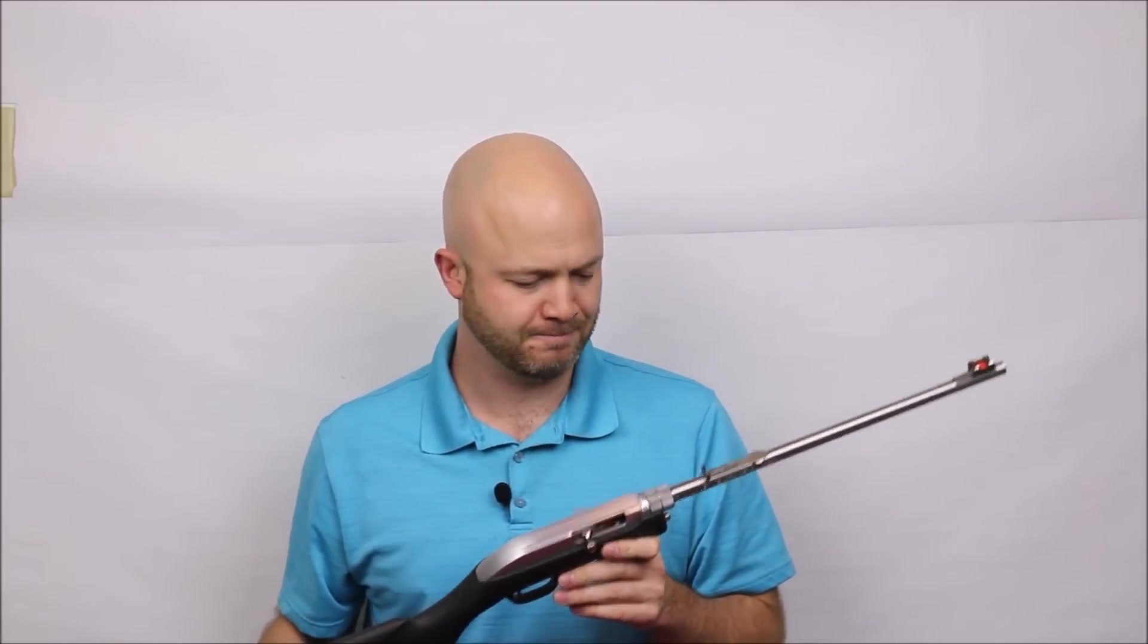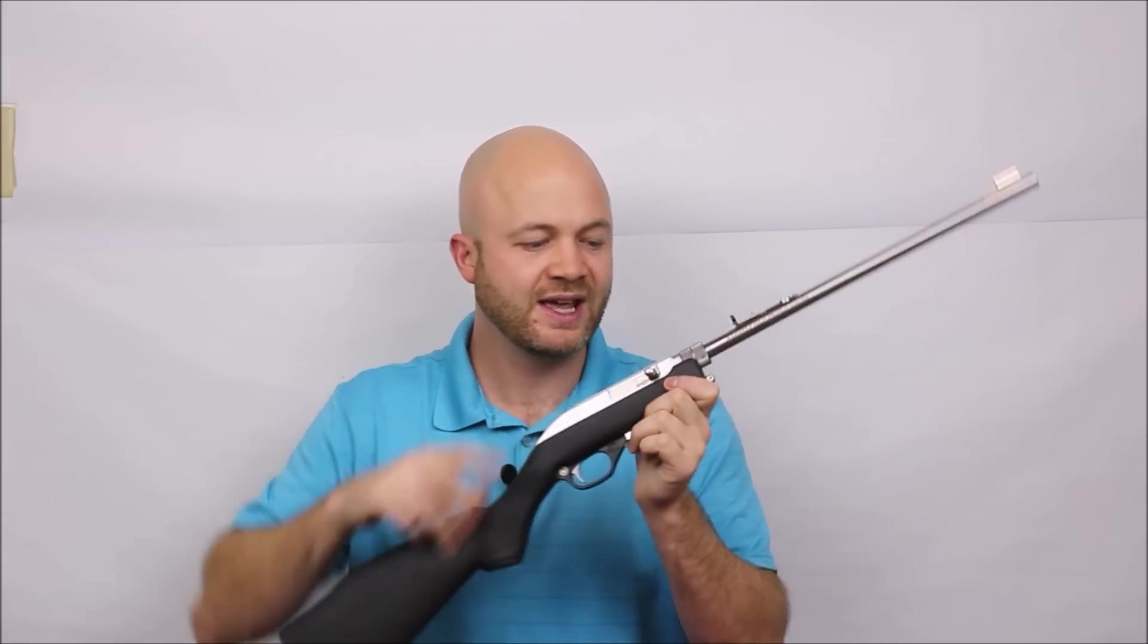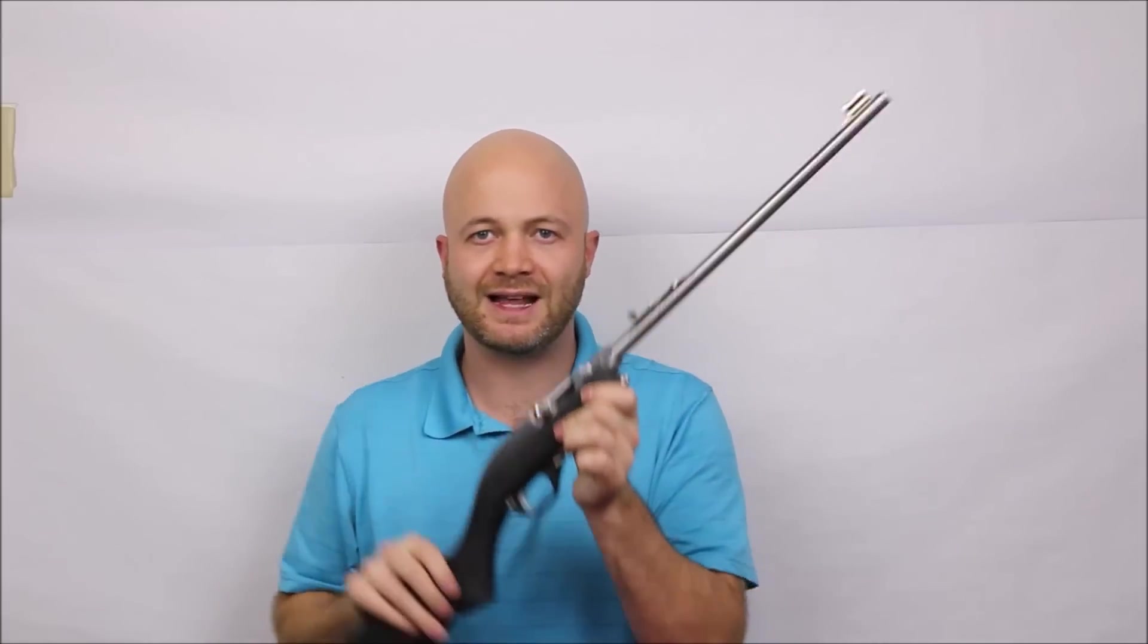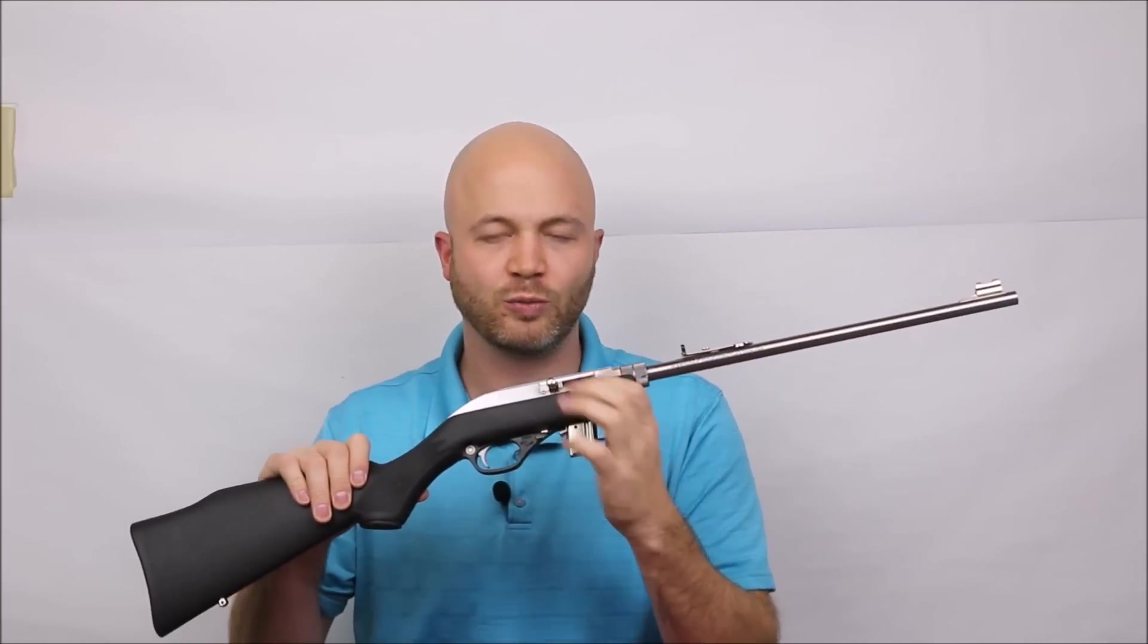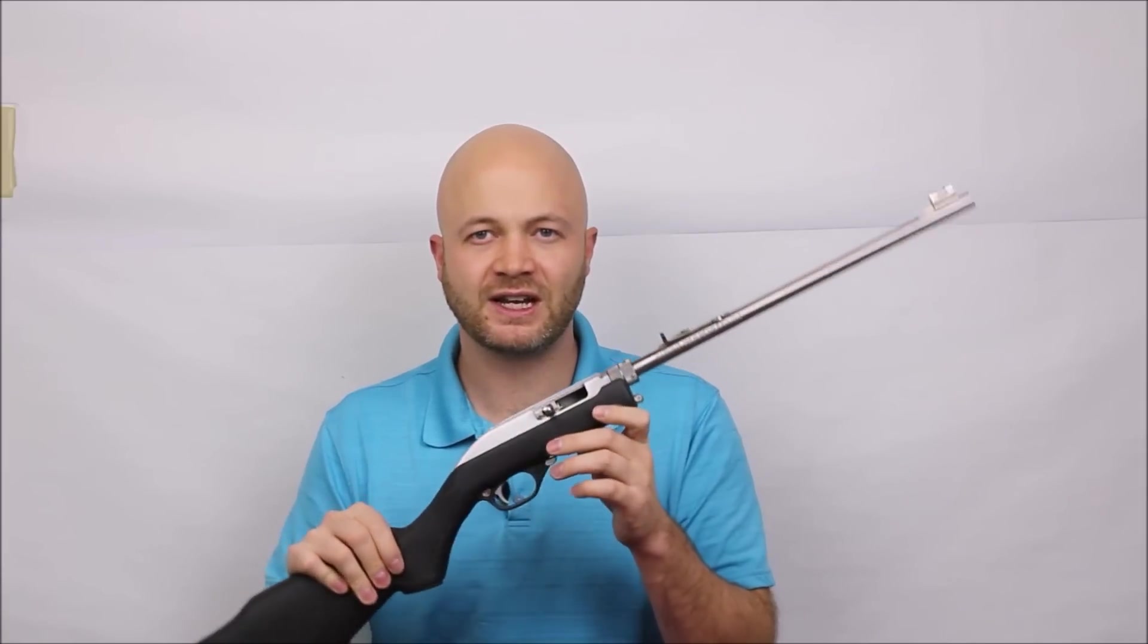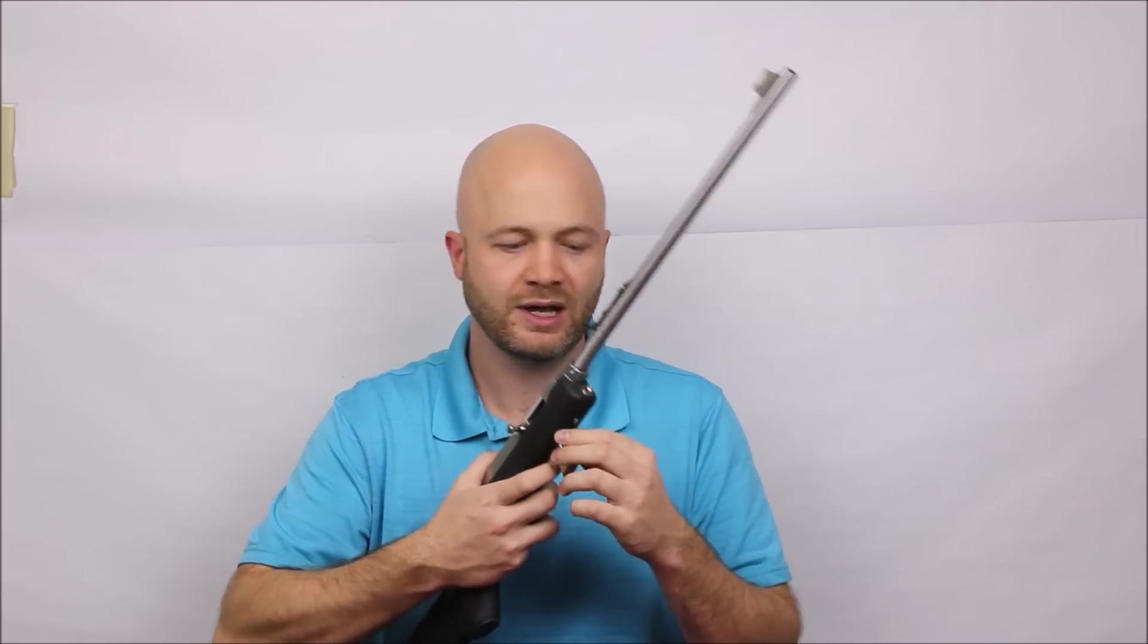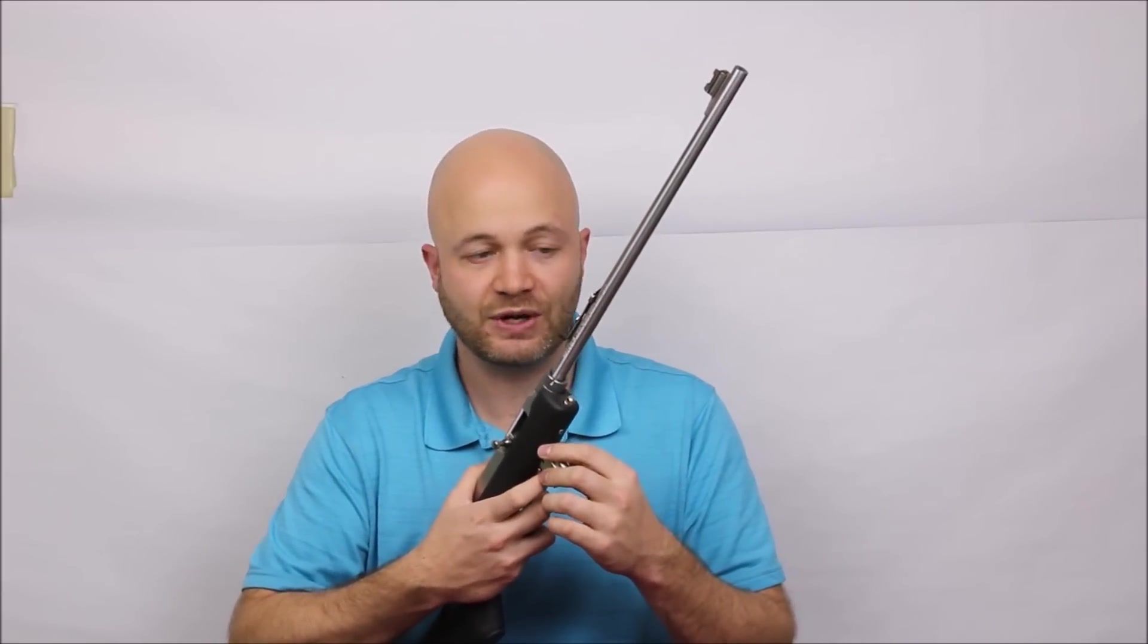Because it's based on the Marlin 795 action, it's got this little gas pedal bolt release here, so you press that down to release the bolt. When the last round is fired, it will lock open to the rear, something you won't see on the 10/22 and some other semi-auto .22s out there.